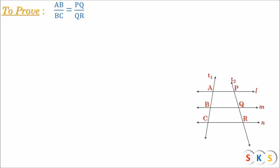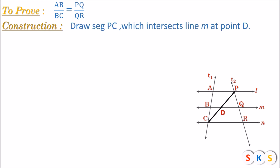This theorem is applicable in a triangle, so here we require a triangle to apply the Basic Proportionality Theorem. We need a construction: we will draw Seg PC and let it intersect line M at point D. Because of Seg PC, we get two triangles — triangle APC and triangle PCR — and in both triangles we are going to use the Basic Proportionality Theorem.